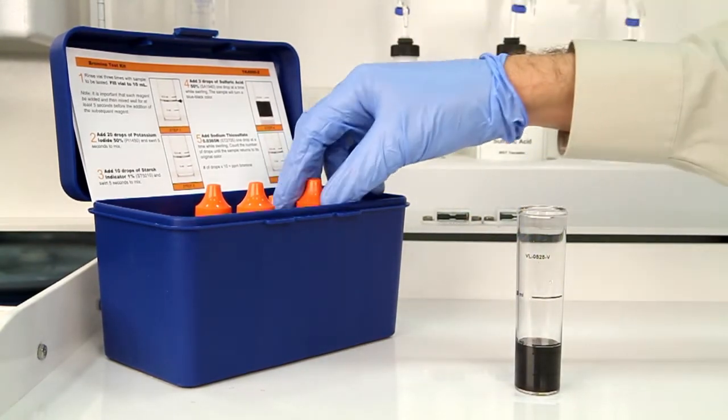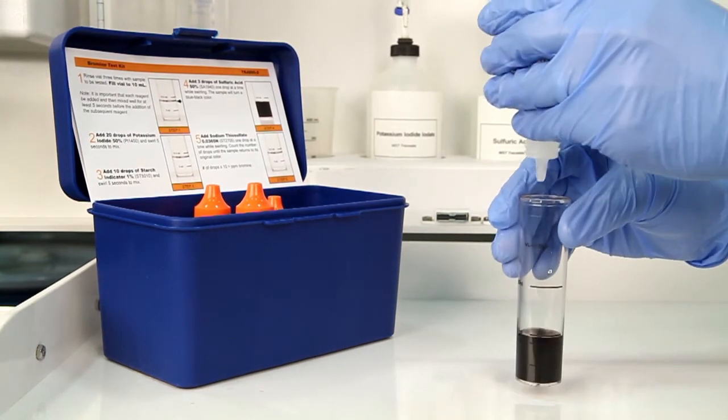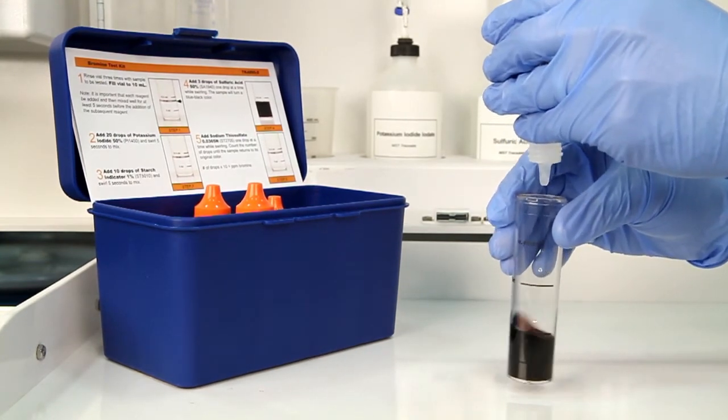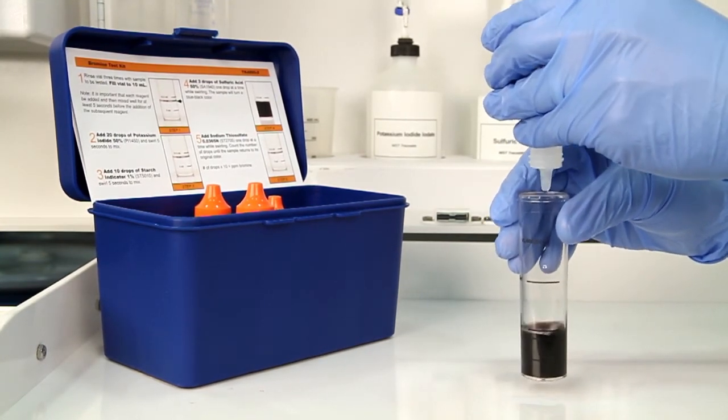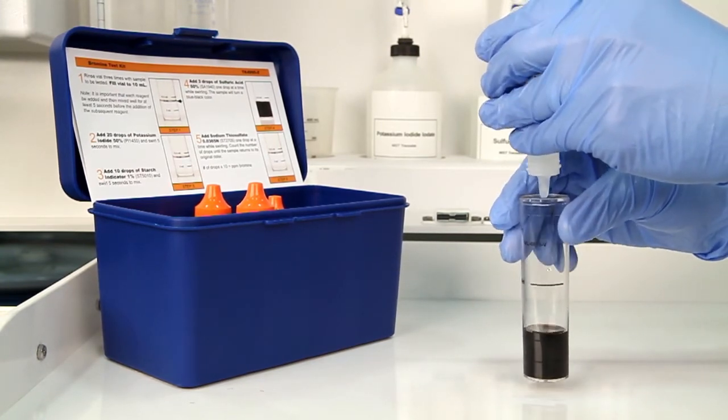The next step is to perform the titration using sodium thiosulfate 0.0365 normal. Each bottle of titrant is labeled with the equivalency and sample size it was manufactured for. It's important to make sure you have the proper titrant and the proper sample size for this titration.